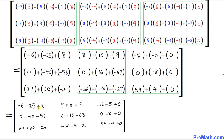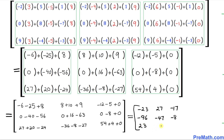The final step is to add and subtract the numbers to get our answer. Negative 6, negative 25 plus 8 gives negative 23. The next number simplifies to 27. Then negative 17, then negative 96, then negative 47, then negative 8, then 23, then negative 71, and finally the last number is 58. That is our answer matrix.